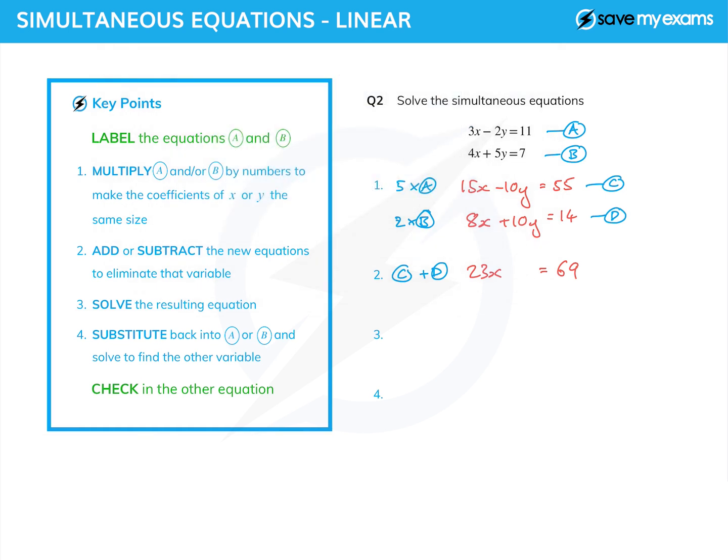And again, a fairly simple equation to solve. So I divide both sides by 23. And yes, they cancel on the left, the 23s. That was the point. And I get x equals, well, 69 over 23 is 3 again.